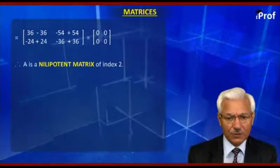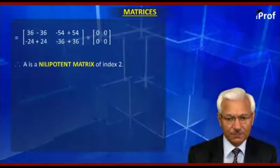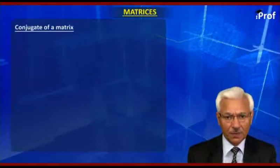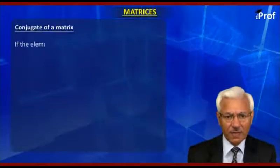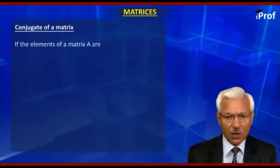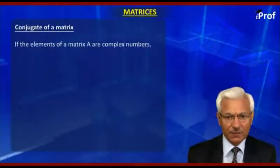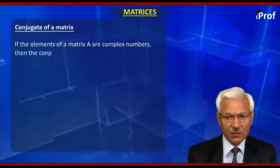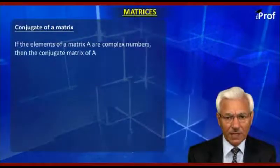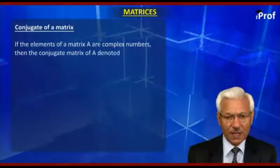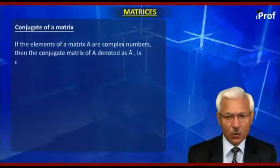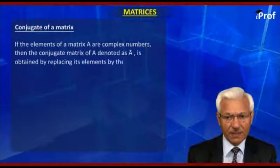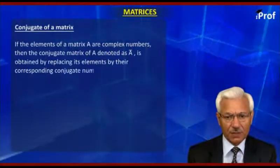Now we talk of a conjugate matrix. This applies when the elements of a matrix A are complex numbers. If the elements of a matrix A are complex numbers, then the conjugate matrix of A, denoted as A-bar, is obtained by replacing its elements by their corresponding conjugate numbers.